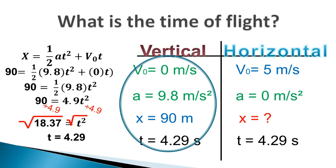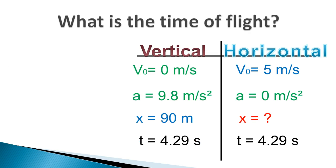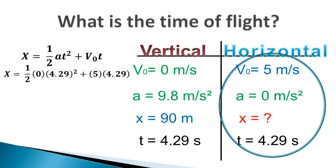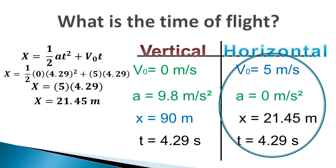Now that we have time, we can find the horizontal distance. Final velocity is not included, so we use the base kinematic equation solved for x. Plugging in: horizontal acceleration = 0, initial horizontal velocity = 5 m/s, and t = 4.29 s. The term ½ × 0 × t² drops out, leaving x = 5 × 4.29 = 21.45 meters — the total horizontal distance the ball traveled from the base of the tower.